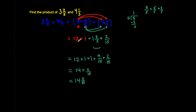Going through all of this demonstrates your knowledge of the distributive property. The distributive property says that each term of a number will multiply each term of another number. So we had: three times four, plus three times one-third, plus two-fifths times four, plus two-fifths times one-third. That results in adding fractions, so we make sure we have the same denominators before adding everything up.